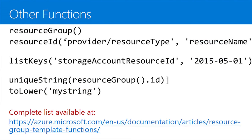Some other common functions: resourceGroup — used a lot with resourceGroup().location to get information about the current resource group. resourceId gives you the full path to a particular resource, useful for linking or setting dependencies. listKeys is your friend for getting keys for something like an Azure storage account. You can also do basic string manipulation like toLower, and there's a link to the Azure docs for all available functions and examples.